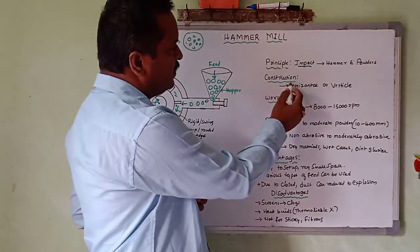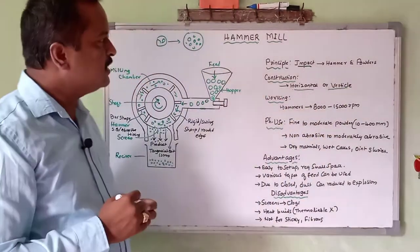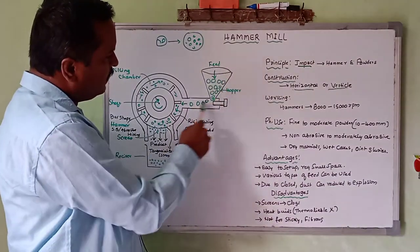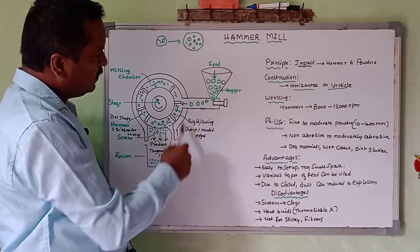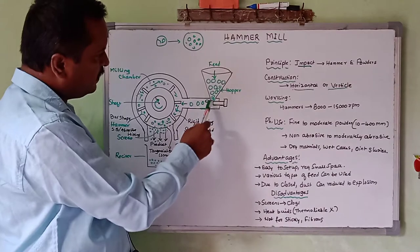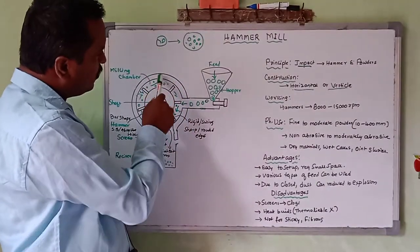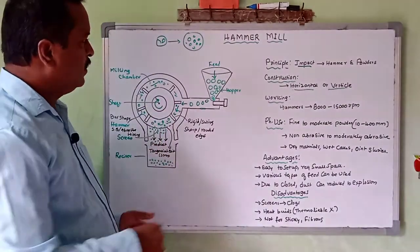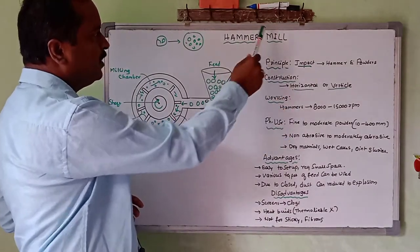Next comes construction. Usually these hammer mills are available in two types based on the feed inlet: horizontal as well as vertical hammer mill. Whatever figure I am showing, it is a horizontal hammer mill because the feed is entering horizontally. If the feed is coming from top to bottom, it is called a vertical hammer mill. Whatever I am explaining is an example of a horizontal hammer mill.